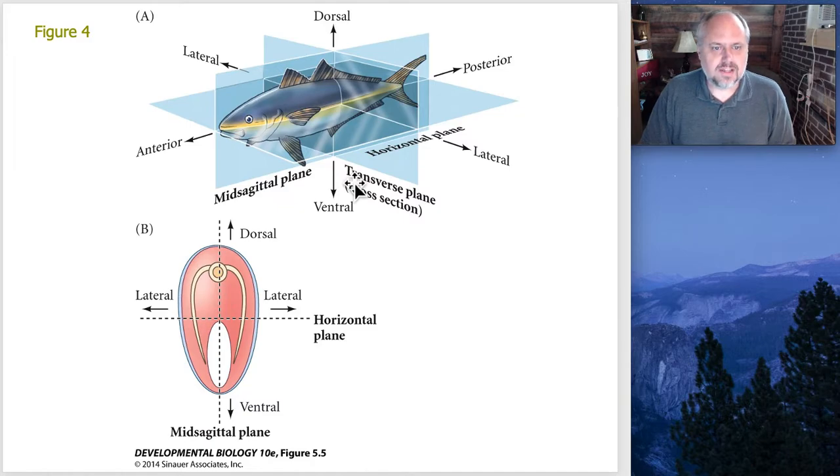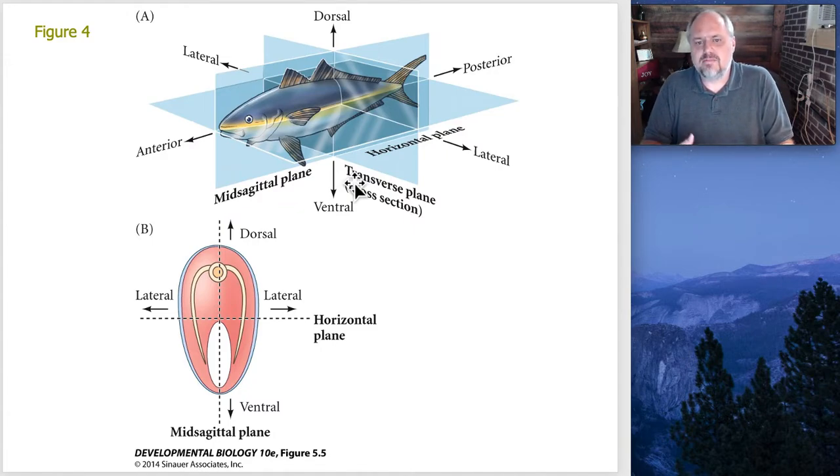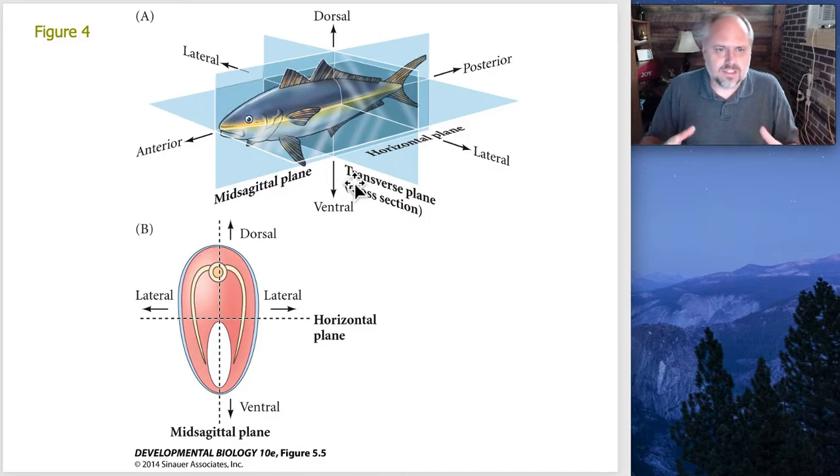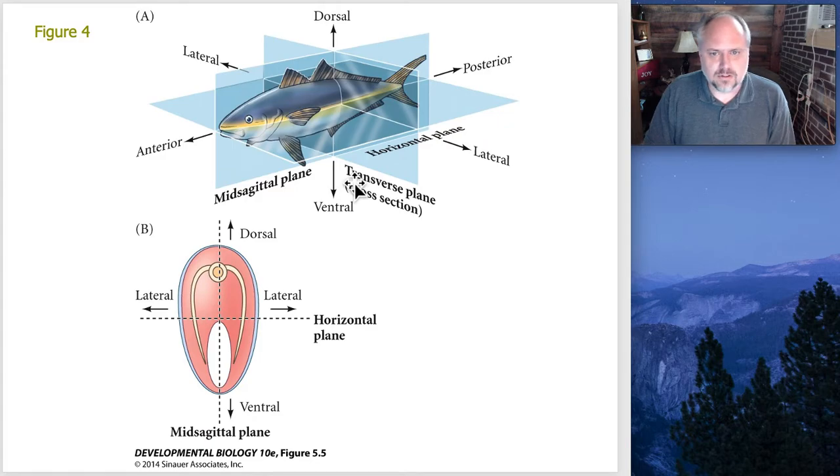These are going to also be terms that help us to basically feel our way around the embryo in the context of the lab. You'll find out that the heart is more anterior to the liver, the pancreas might be more dorsal to the liver or more ventral to the liver. These axes are terms that allow us to basically build those relationships and understand how the embryo is put together.